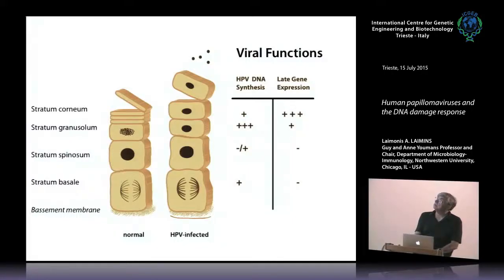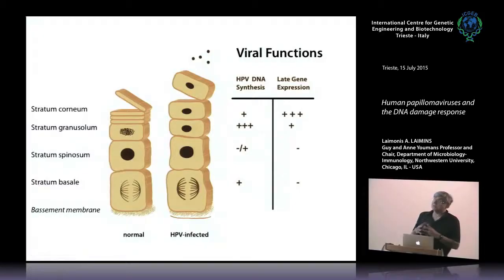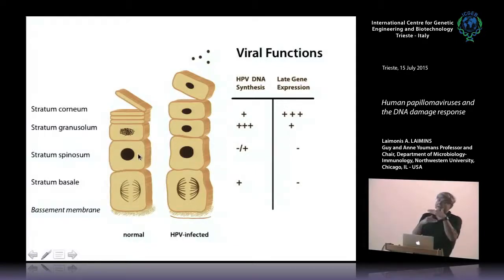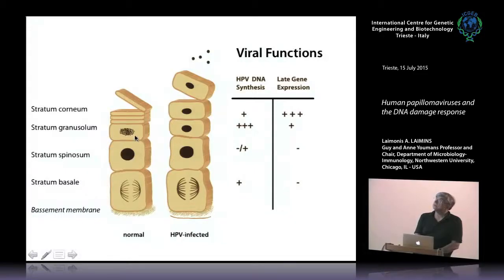This is the squamous epithelia. A normal squamous epithelia is about 30 layers thick, of which cells in the basal layer are the only ones actively dividing—these are the stem cells and transit amplifying cells. When these cells divide, one daughter cell remains in the basal layer and the other is pushed upwards. As it leaves the basal layer, it immediately exits the cell cycle, and as it migrates upwards, about two-thirds of the way up, the nuclei are degraded, so the very top of the epithelia are just bags of keratin.